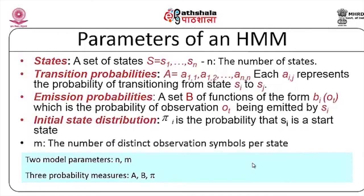Next we have the emission probability, which is a set B of functions of the form B(i, OT) — the probability of observing OT at time T when we are in state SI. And then we have an initial state probability pi, the probability that each state SI is the initial state. M is the number of distinct observation symbols per state — for example, for a noun POS tag, M is the number of distinct words that can be associated with it.